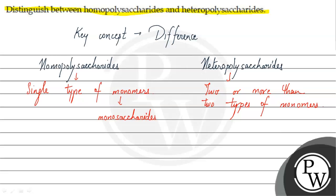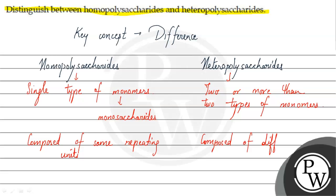Homopolysaccharides are composed of the same repeating units because there is only one monosaccharide involved. Heteropolysaccharides, on the other hand, are composed of different repeating units of monosaccharides.